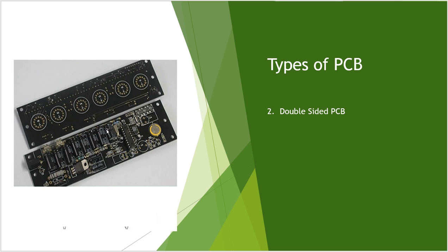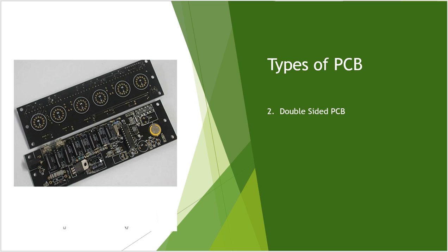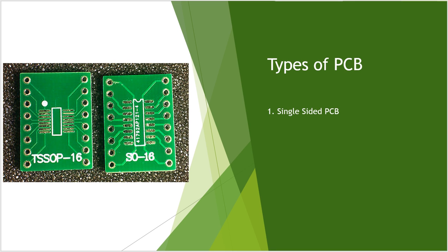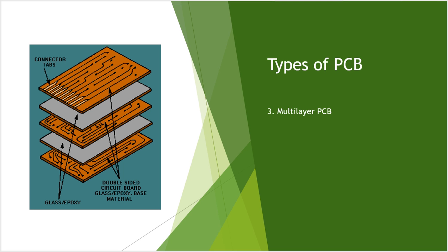The next type is the double-sided PCB. I am showing you this one PCB from both sides. As you can see, there are copper traces on one side, and on the other side you can also see a few golden lines — some traces on this part and on this part of the PCB as well. That means the copper traces are on both sides of the PCB, which is why we call it a double-sided PCB.